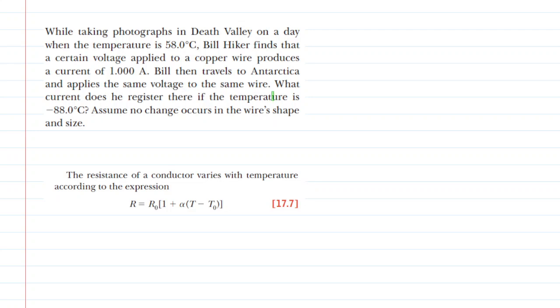One of the key concepts illustrated in this question is how resistance changes with temperature. We're going to be traveling from Death Valley, where the temperature is a relatively balmy 58 degrees Celsius, onto Antarctica, where the temperature drops to negative 88 degrees Celsius.